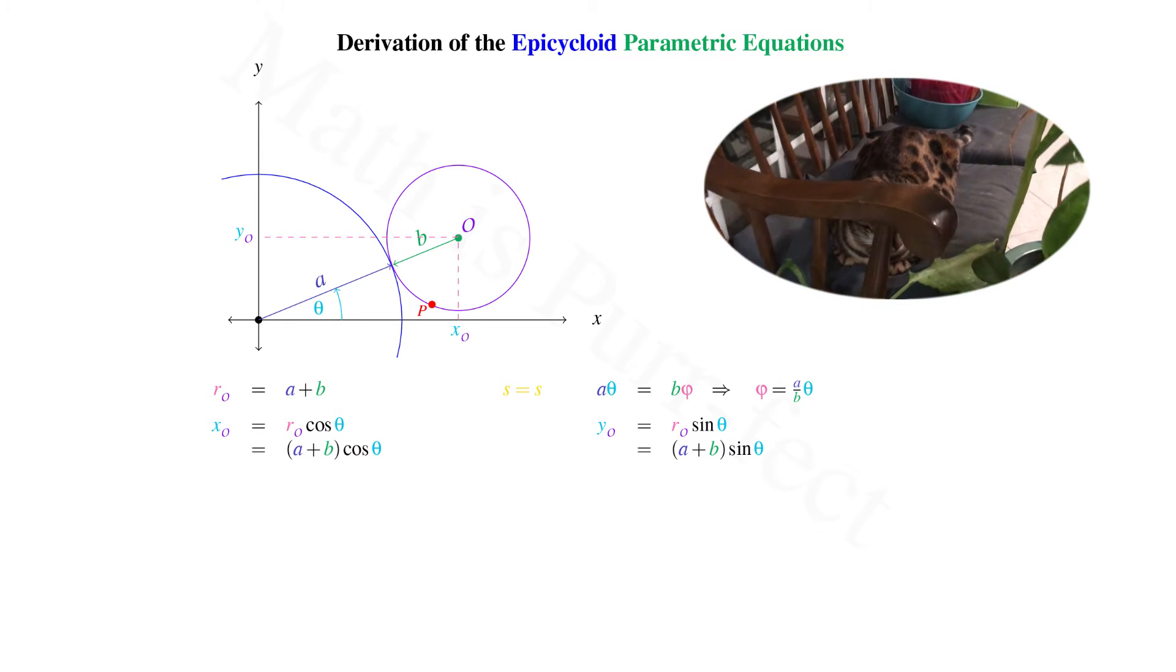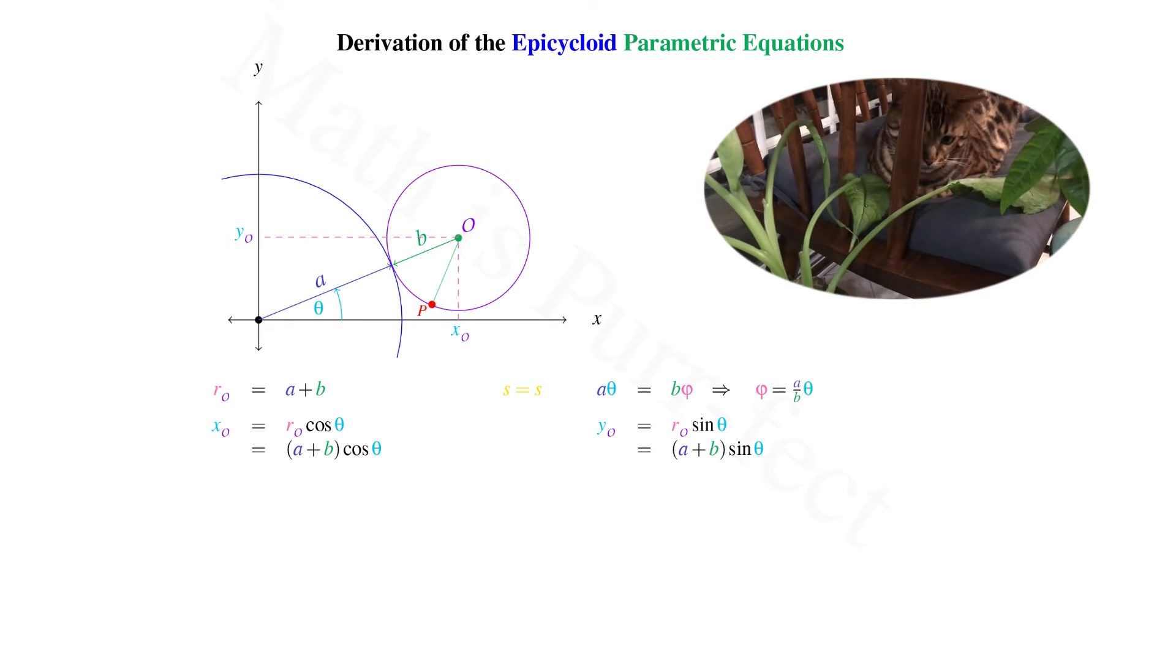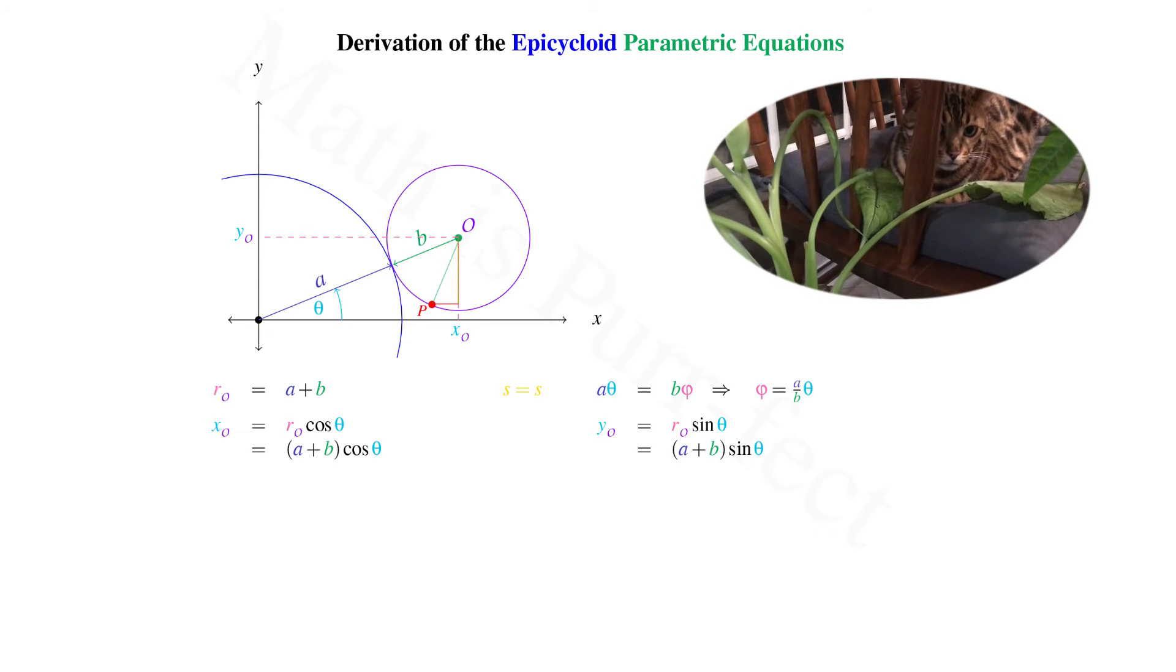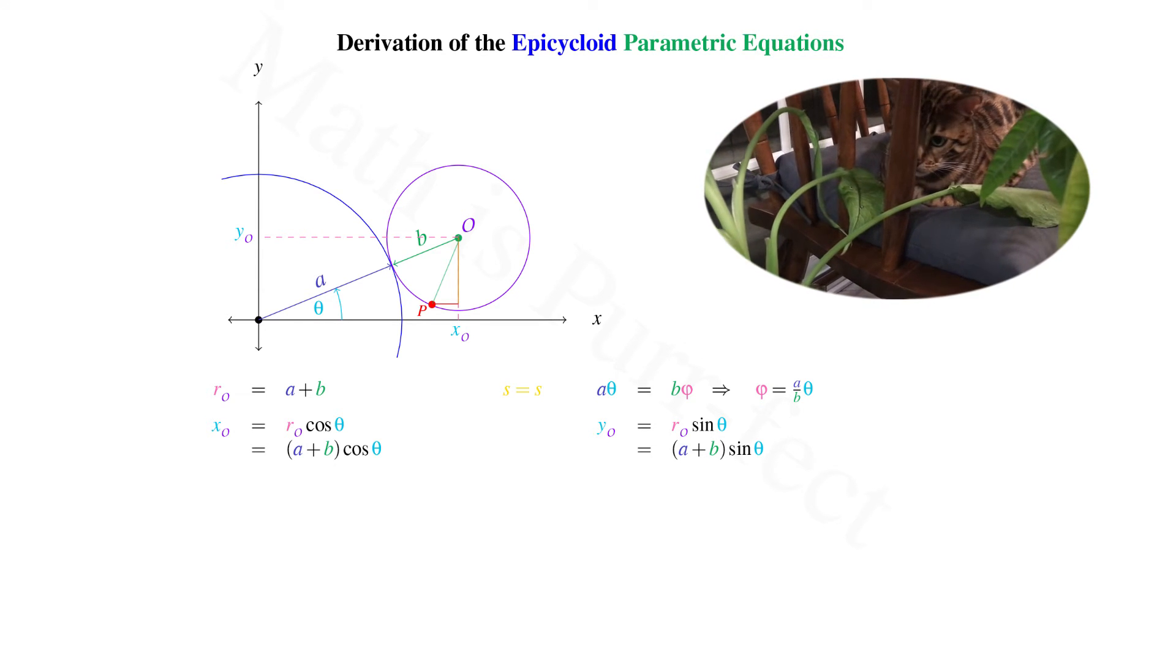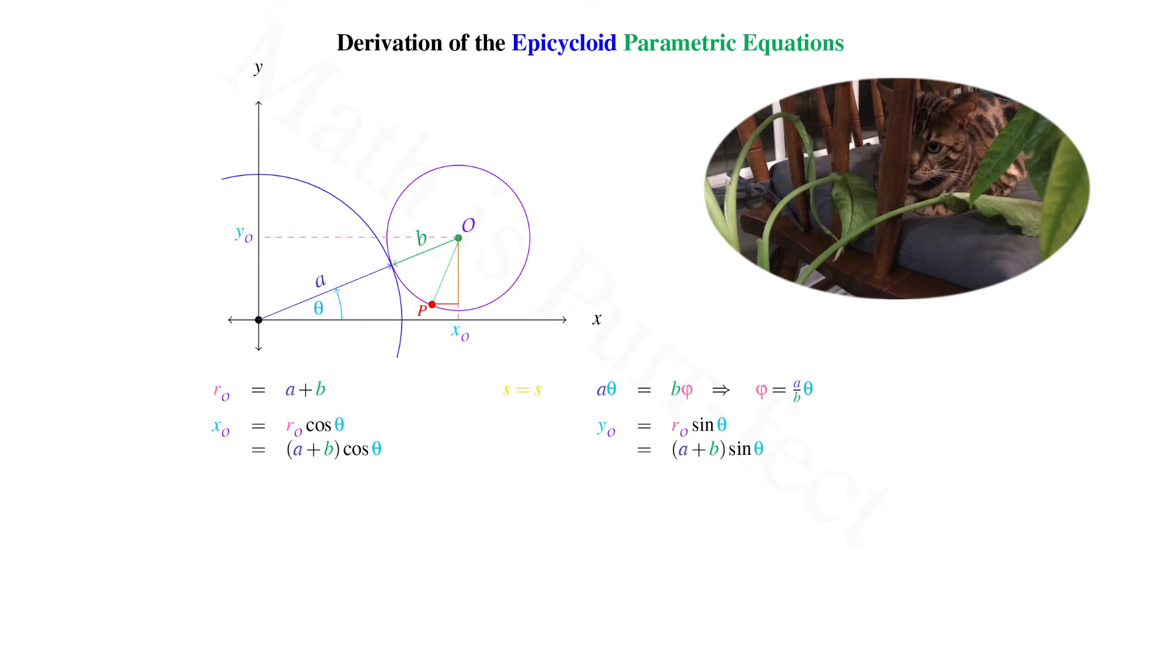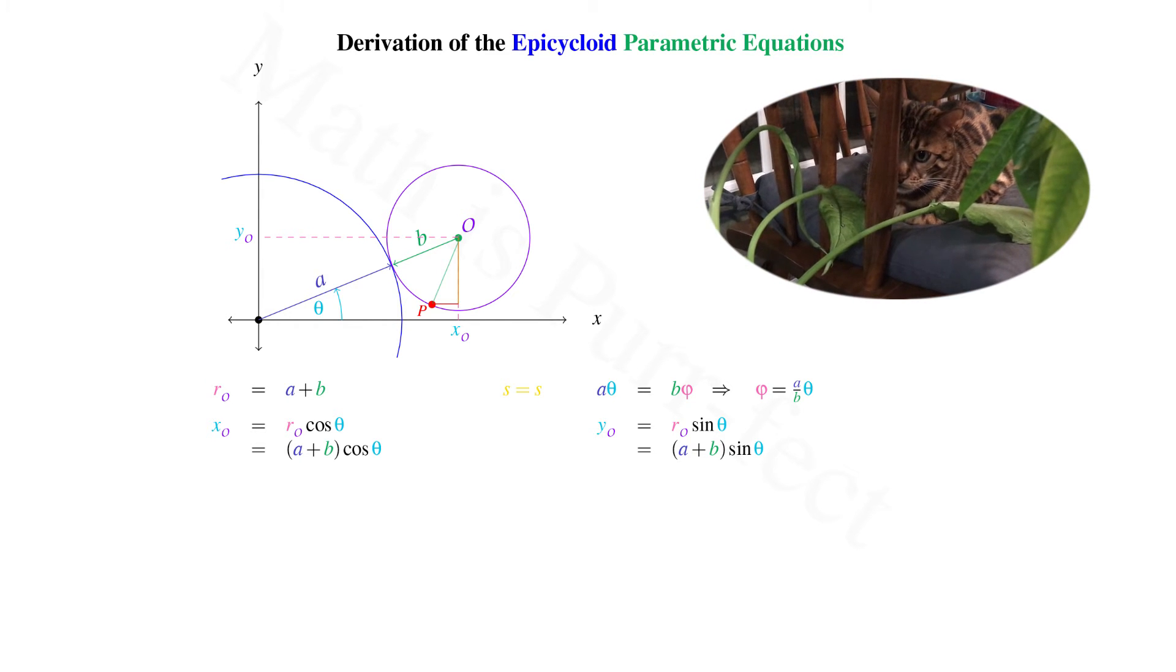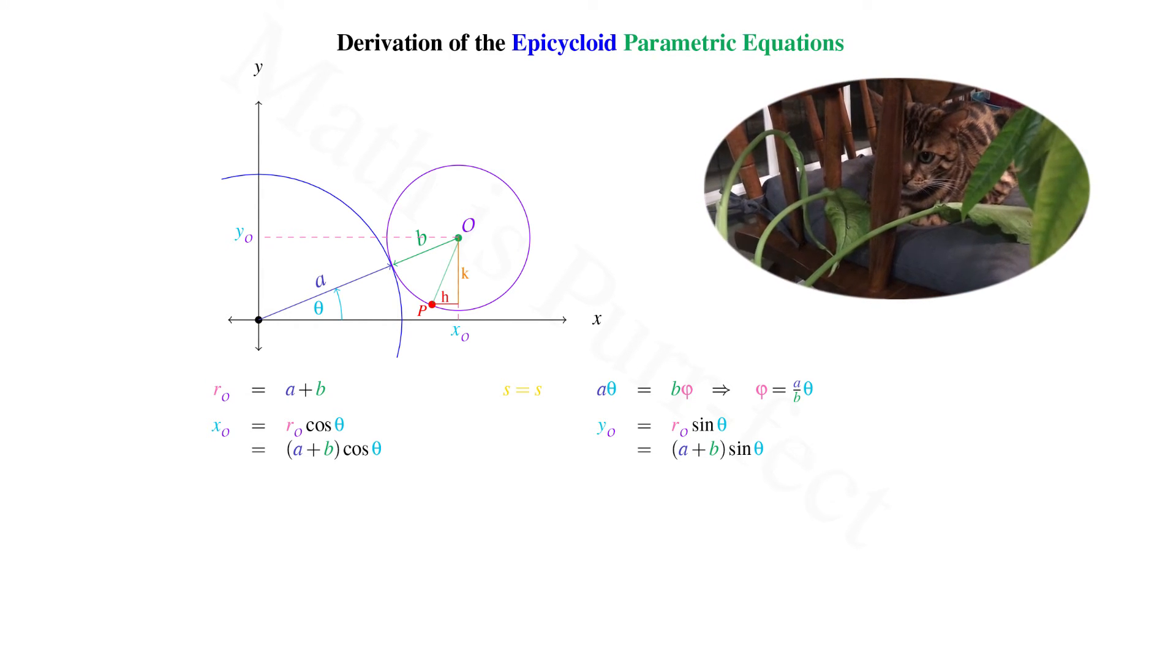From here we traverse from O to point P. In order to find the coordinates of P, let's look at the right triangle made with hypotenuse OP, where width and height are constructed parallel to the X and Y axes respectively. Call them H and K.